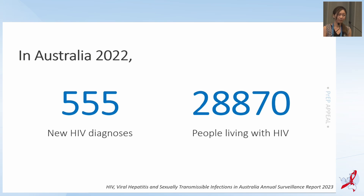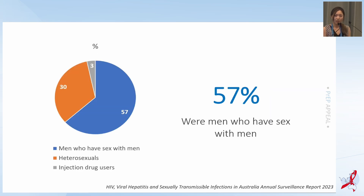Let's start with the background. In Australia in 2022, there were 555 new HIV diagnoses, summing up to about 29,000 people living with HIV in the country. Among those with new HIV diagnoses, 57% were men who have sex with men.